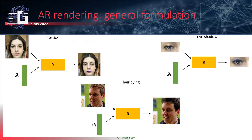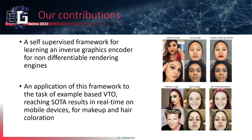A generic pattern emerges for cosmetic virtual try-on: given a source image and some cosmetic parameters, denoted g_i, a renderer is used to generate the targeted image. Examples of this include lipstick, eye shadow, and hair dye.